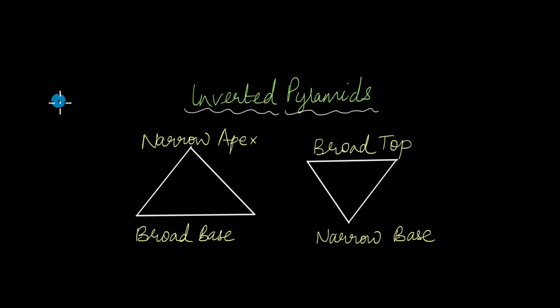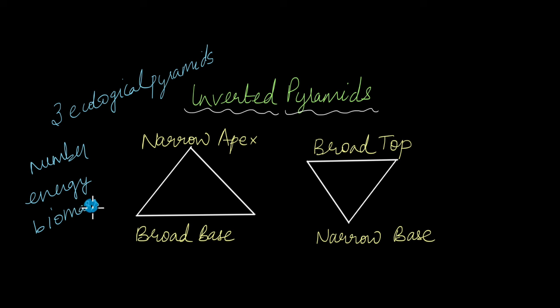In the previous video we talked about the three types of ecological pyramids: the number pyramid, the energy pyramid, and the biomass pyramid. So far whatever we had seen in that video were types of upright pyramids, where the base was broad and as we went up each trophic level the bar became shorter and the top was the narrowest. We were of course starting off with producers at the bottom and we were going up each trophic level.